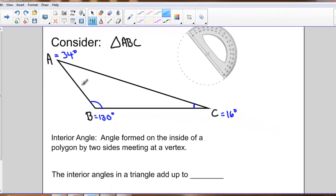So in my triangle, I got an angle of 34 degrees, 130 degrees, and 16 degrees. If I add those all up, 34 plus 130 plus 16, I get 180 degrees.